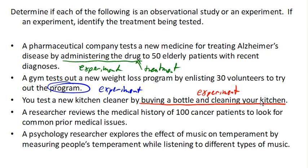Suppose a researcher reviews the medical history of 100 cancer patients to look for prior medical issues. In this case, the researcher isn't doing anything to these people — they're simply looking at their previous medical records. And so this is observational. This is not an experiment because they're not subjecting the patients to any treatment.